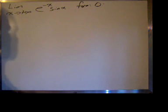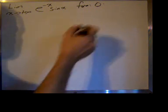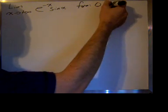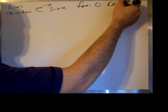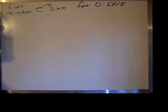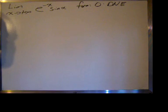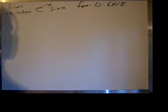As the sine of x goes to positive infinity, it doesn't rest on any one number — it goes between positive and negative 1 — so we say that that limit does not exist. We don't say that zero times 'does not exist' is zero; 'does not exist' is not a number. Zero times a number equals zero, not zero times something that doesn't exist. So we have to use something here.